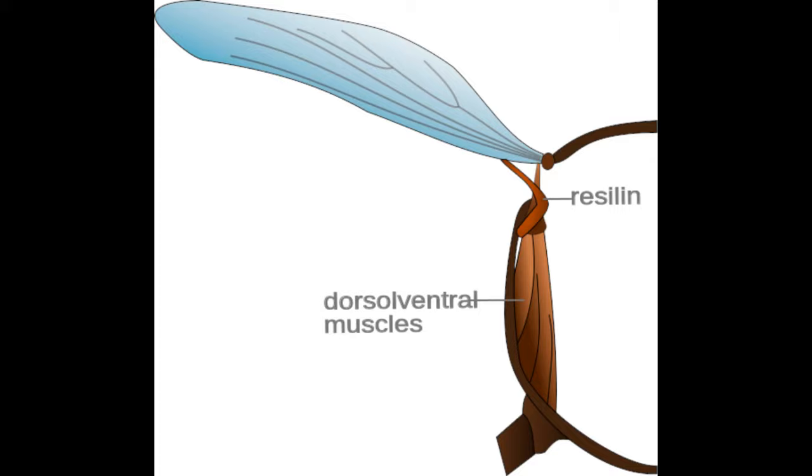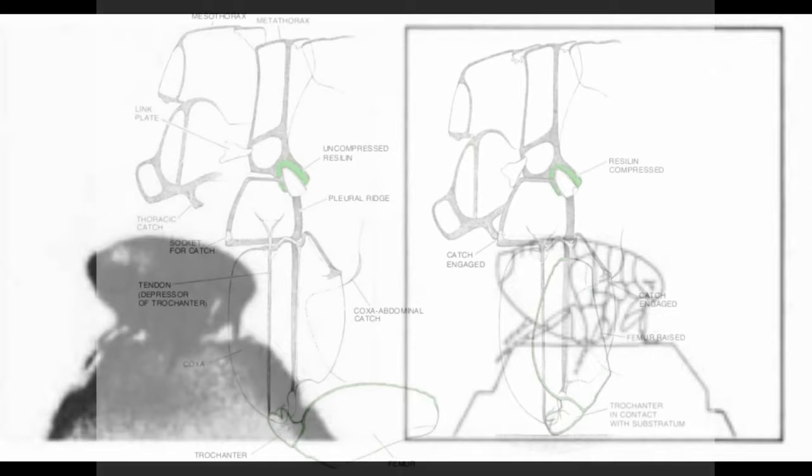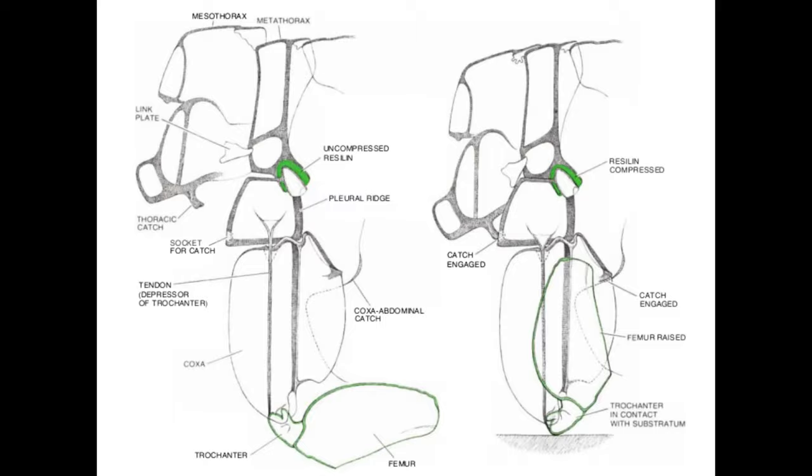When fleas cock their legs before jumping, they compress the resilin, which stores the energy from the movement of the leg muscles. When released, all of that energy is transferred down the leg and drives against the ground, launching the flea.